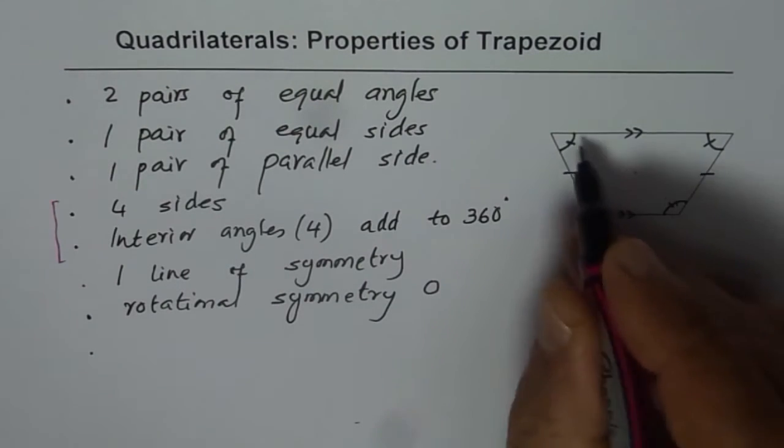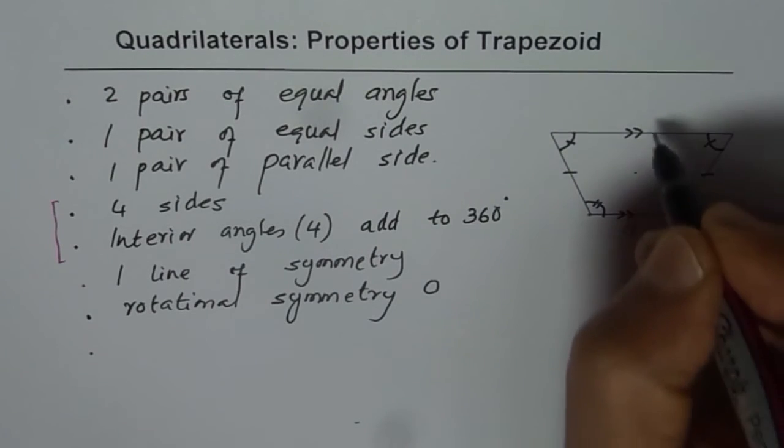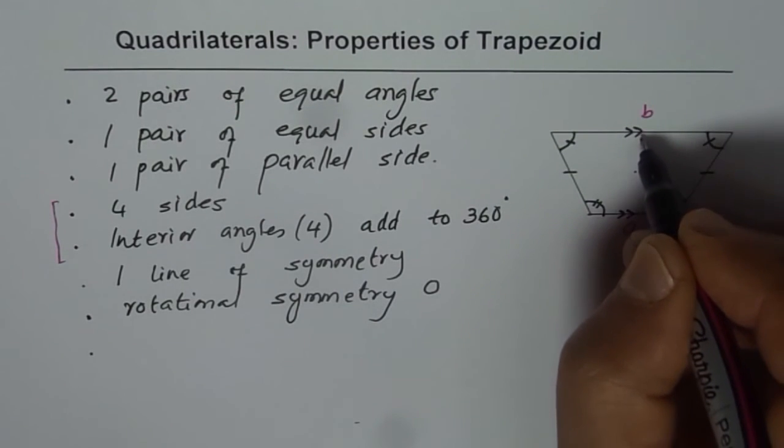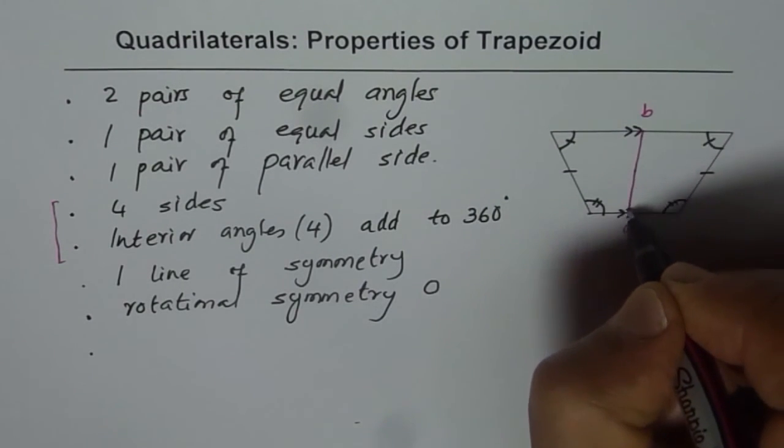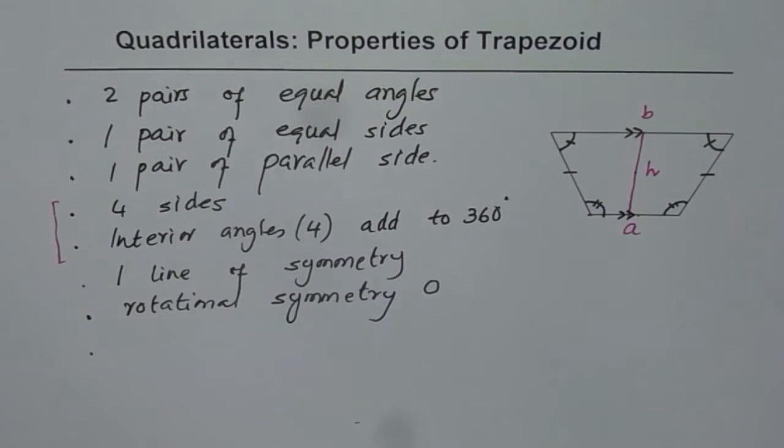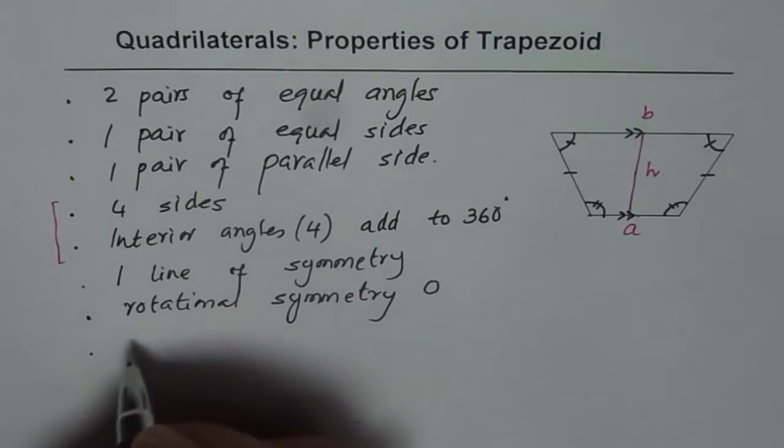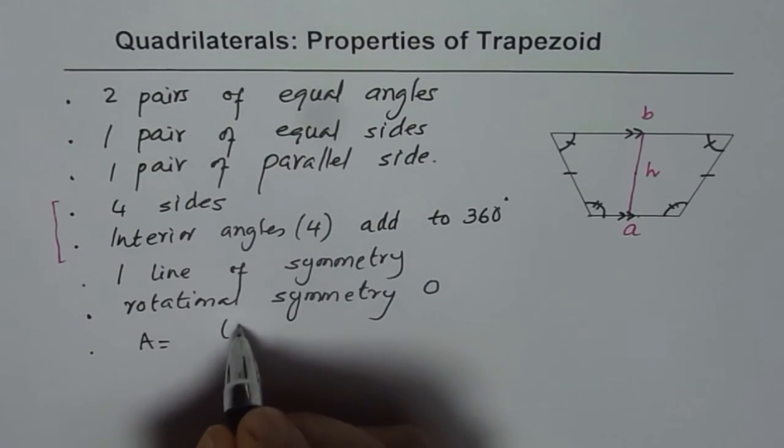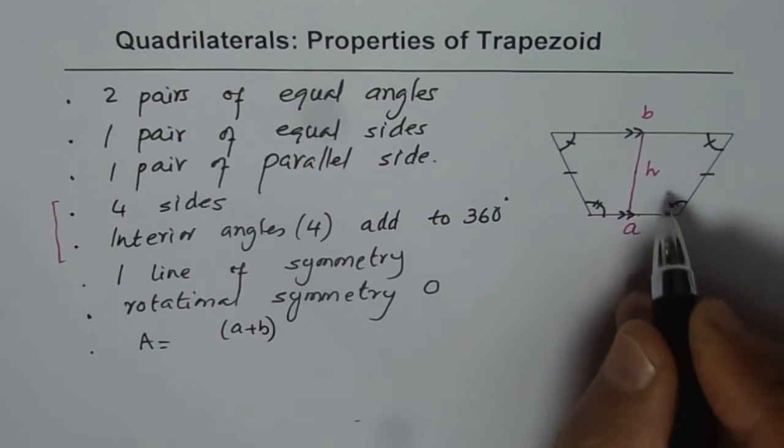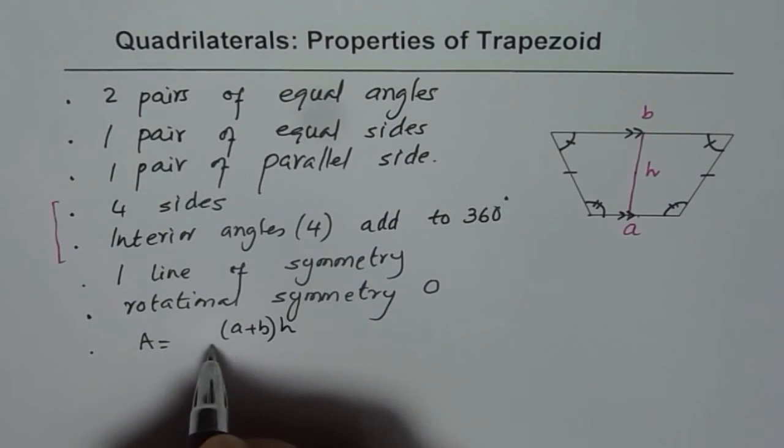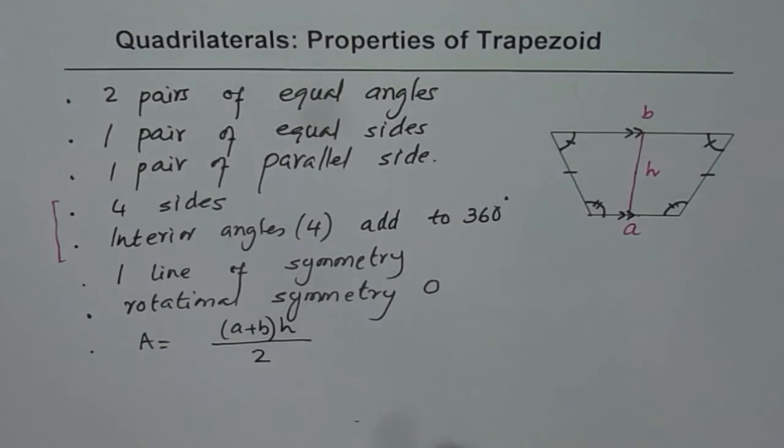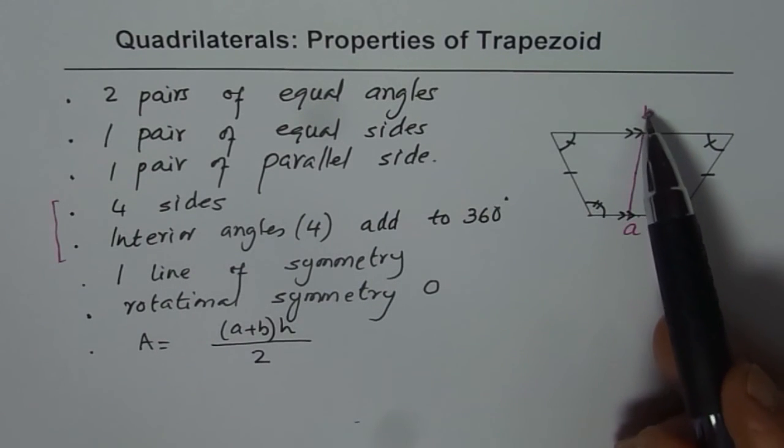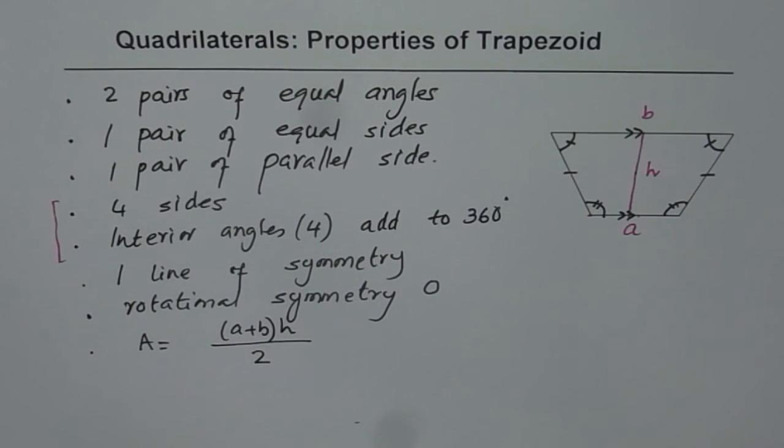So we say if this set of parallel lines are a and b, the length is a and b, and let us say that the height is h. In that case, we can find the area. Area is sum of these two sides, that is a plus b, times height, divided by 2. So it is half of product of sum of sides into height. That is how we get area of this shape.